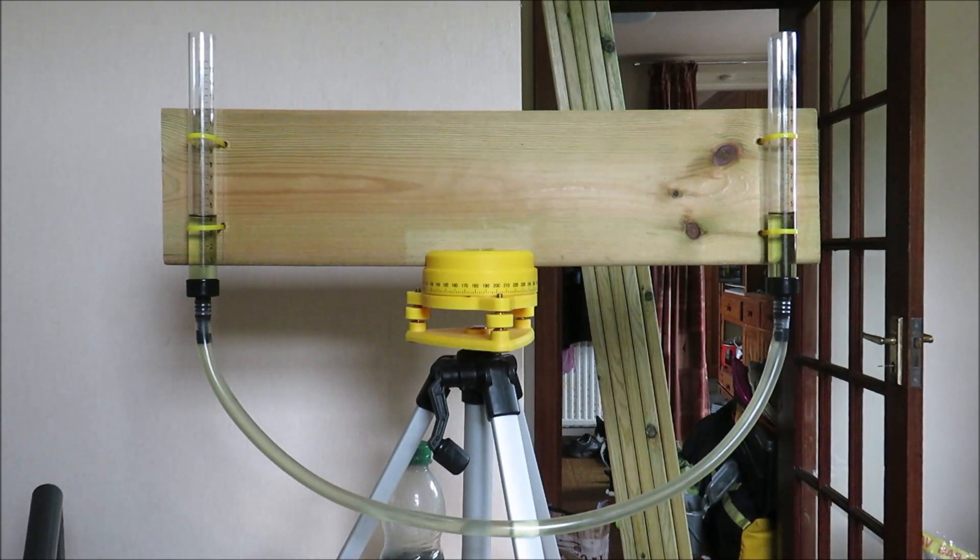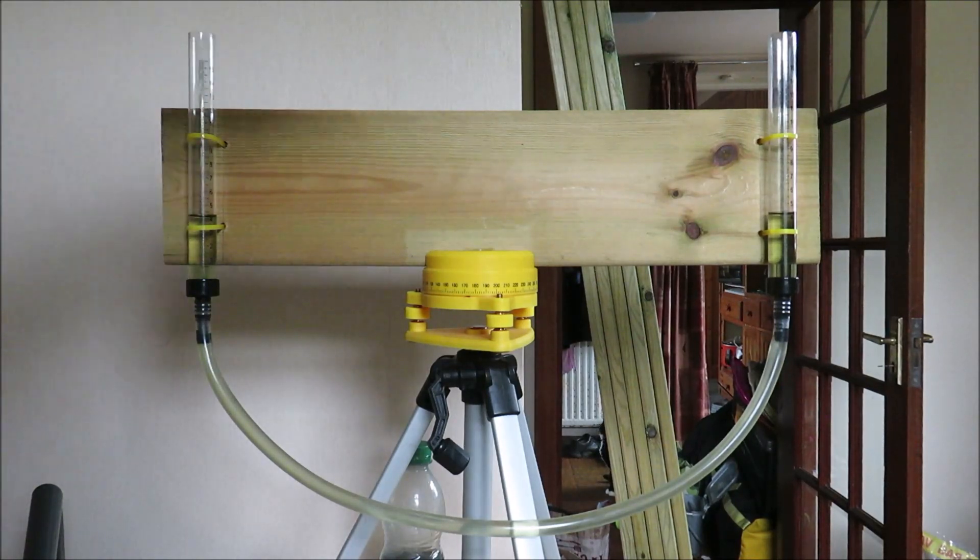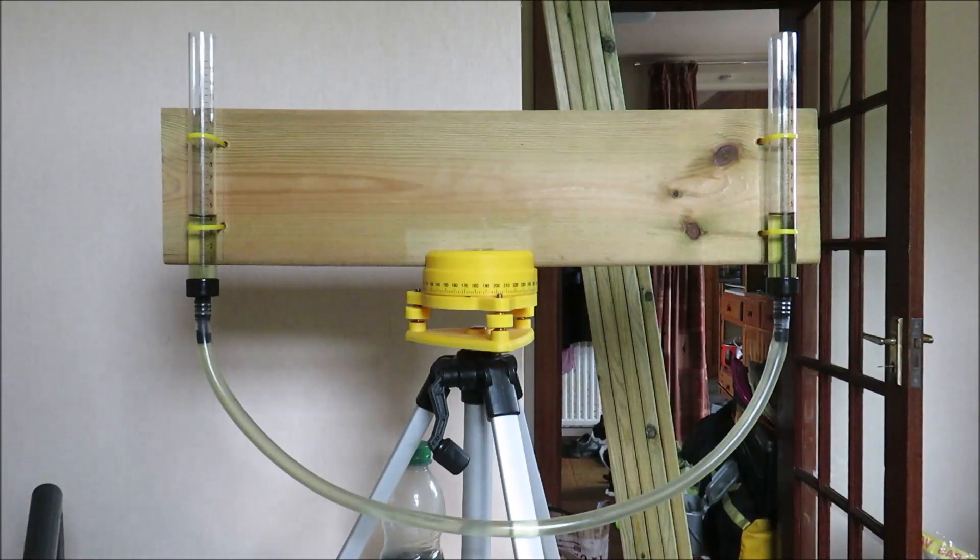And it's easy to illustrate water finding its own level using the kind of device that I've got set up here. We've got two cylinders connected by a tube with some coloured water in them, and that water is level on both sides. Although these are not positioned absolutely perfectly, it's really just above four on this side and just above four on this side. We can be confident that the water is the same height, the same level on each side.